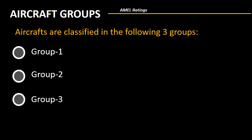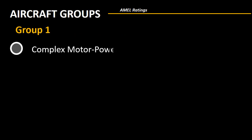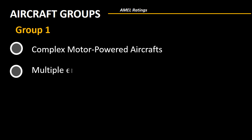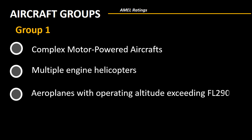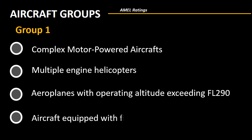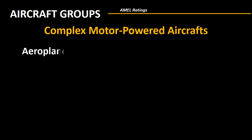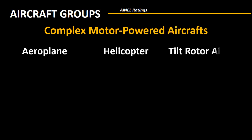Aircrafts are divided into three groups: Group 1, Group 2, and Group 3. Group 1 includes complex motor powered aircrafts or multiple engine helicopters. They also include aeroplanes with operating altitude exceeding Flight Level 290, or any aircraft which are equipped with fly-by-wire systems. Complex motor powered aircrafts could be aeroplanes, helicopters, or tilt rotor aircrafts.